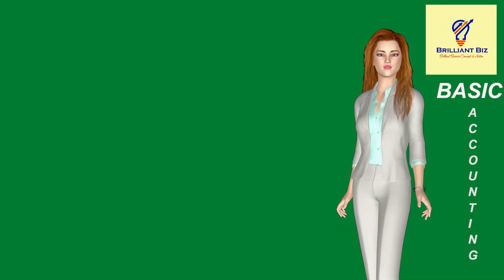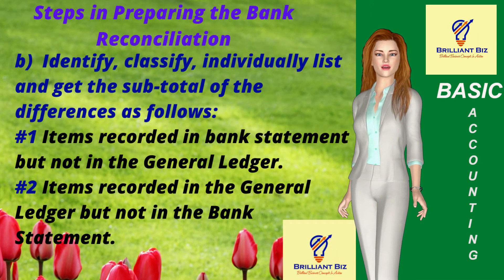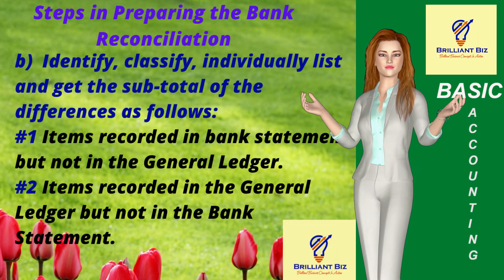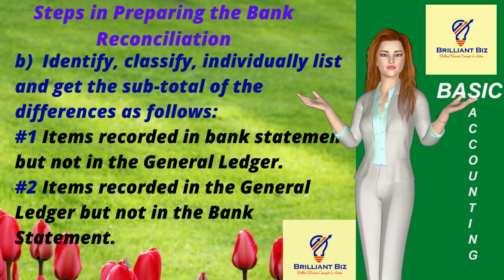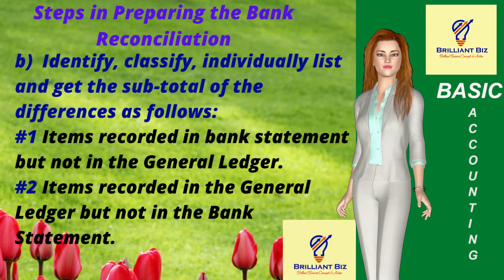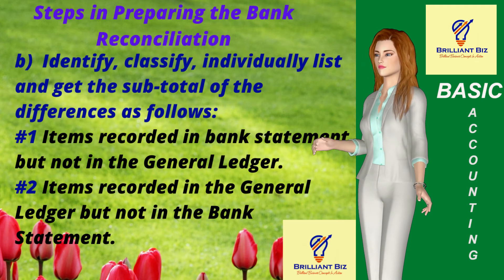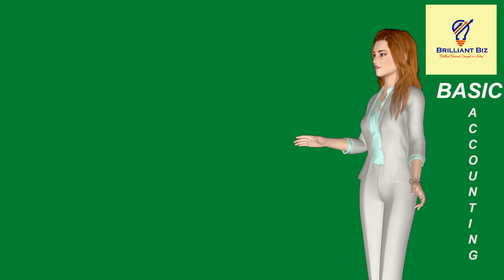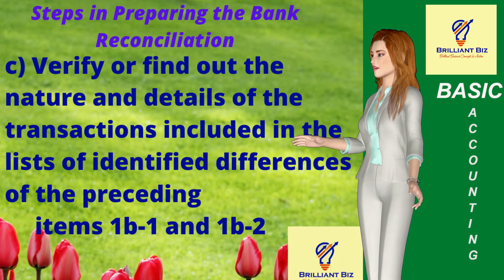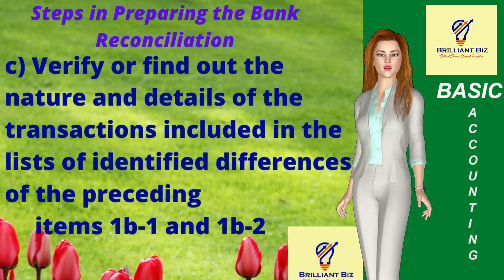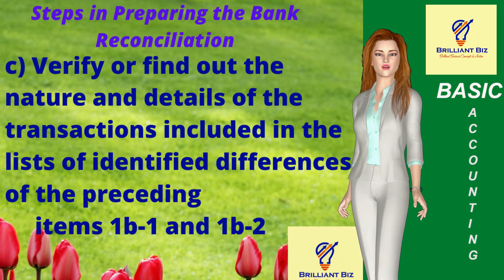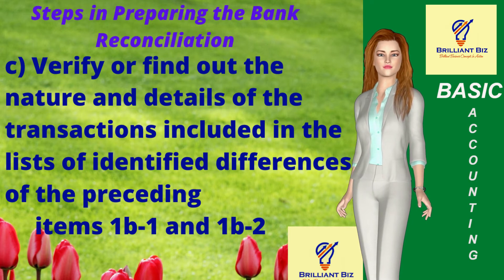Step 1B: Identify, classify, individually list, and get the subtotal of the differences as follows: (1) items recorded in the bank statement but not in the general ledger, and (2) items recorded in the GL but not in the bank statement. Step 1C: Verify or find out the nature and details of the transactions included in the lists of identified differences from the preceding items 1B.1 and 1B.2.